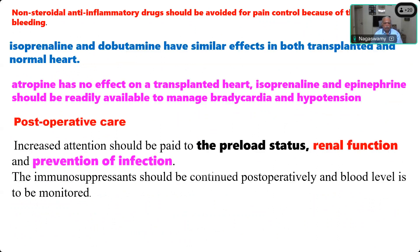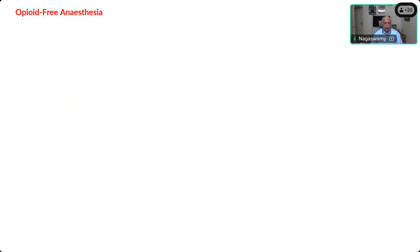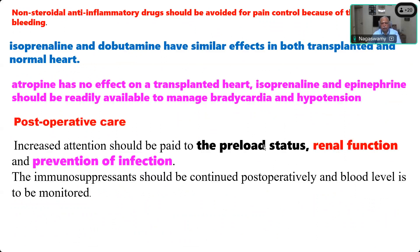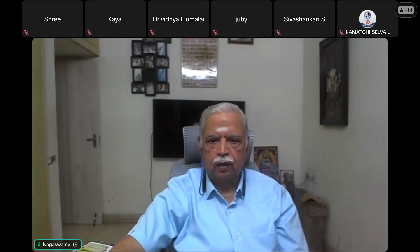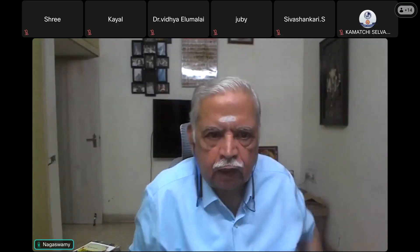For post-operative care, increased attention should be paid to preload status, renal function, and prevention of infection. Immunosuppression should be continued post-operatively and blood levels monitored. In summary, this question is straightforward if you know the physiological changes of the transplanted heart relevant to anesthesia — such as the inability to use neostigmine and the ineffectiveness of atropine — all based on understanding the behavior of the transplanted heart.